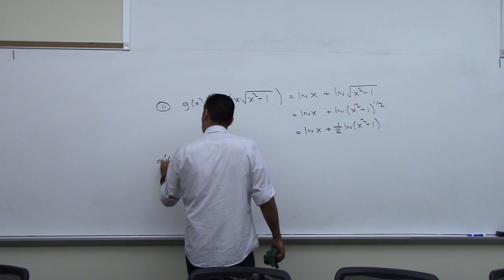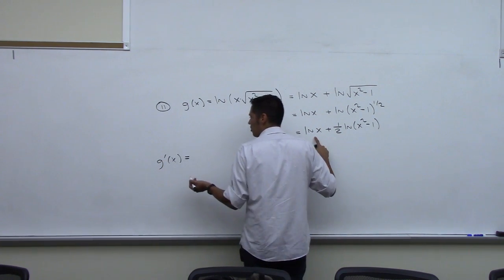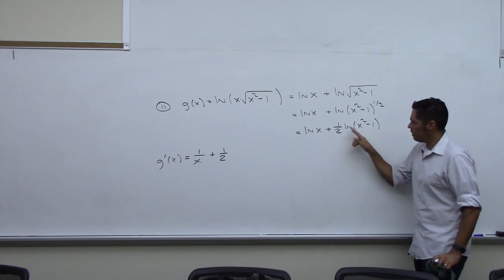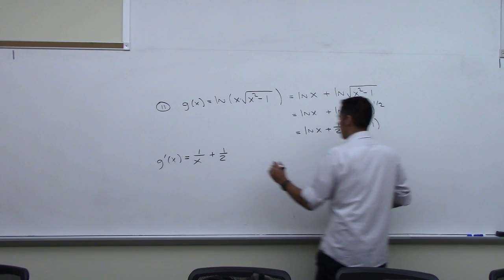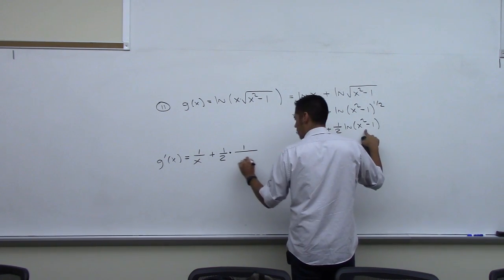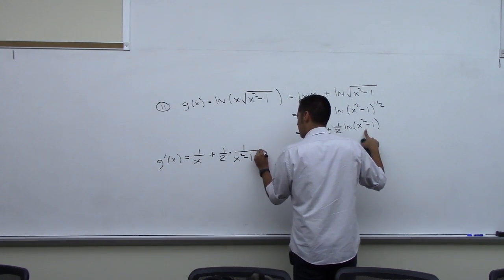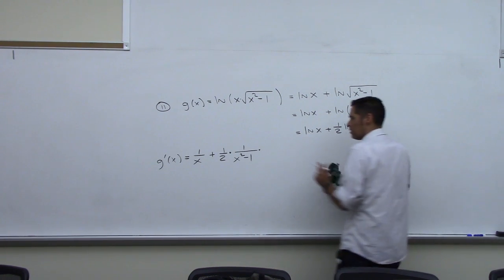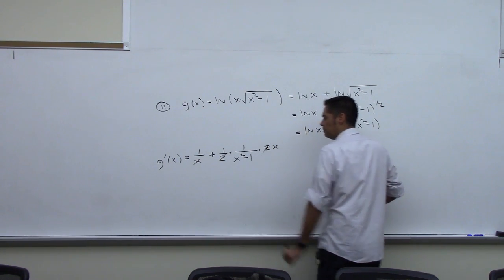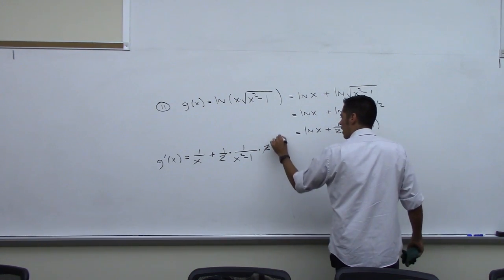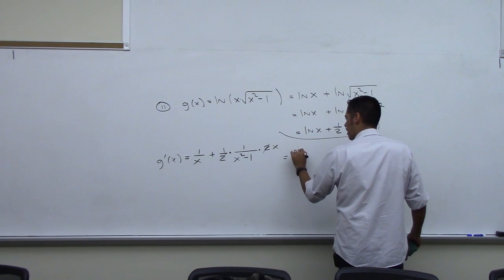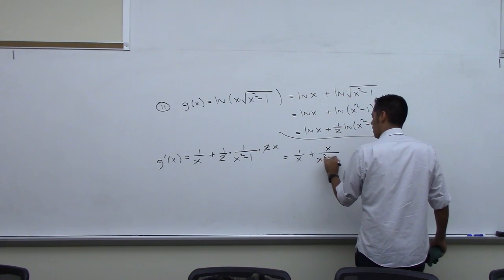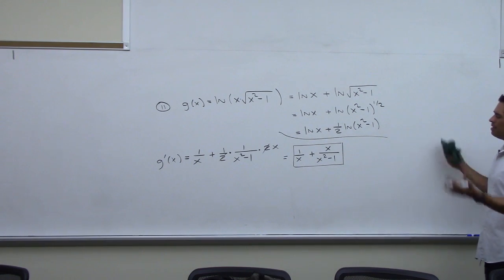Now the derivative: the derivative of natural log of x with respect to x is just 1 over x, and then plus a half that's going to come along for the ride. And now a little chain rule — derivative of natural log of something is 1 over that something times the derivative of what's in here. Two terms: derivative of x squared is 2x, derivative of 1 is 0, so we just get 2x. This 2 and this 2 cancel. This x will go on top. So this equals 1 over x out front plus x over x squared minus 1. I could get a common denominator but I'll just leave it like that.